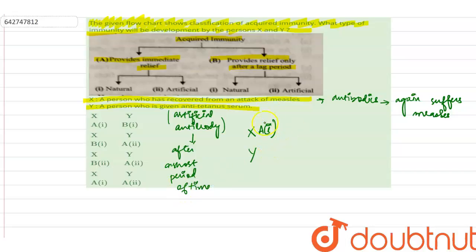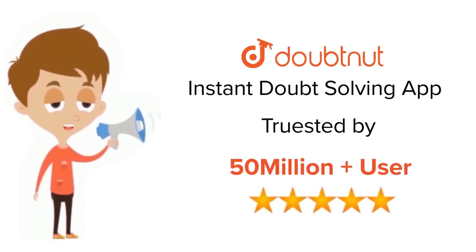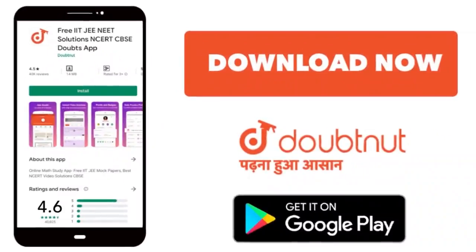So Y will be falling under category B and artificial antibodies. If you see the options, our correct option is option number one. For class 6-12, IIT-JEE and NEET level, trusted by more than 5 crore students. Download Doubtnet app today.